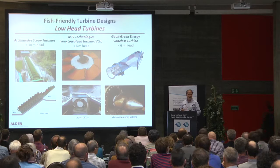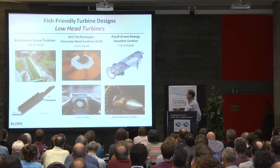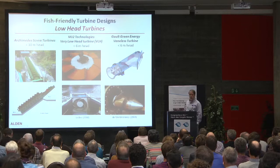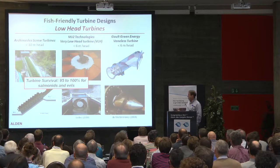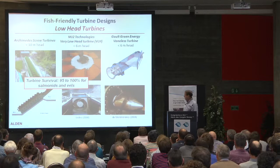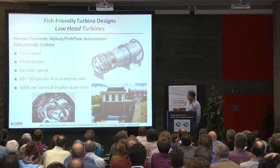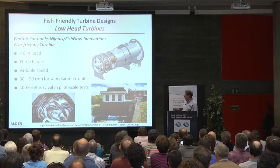I'm going to go over a few more technologies. The Archimedes screw, the very low head turbine, and the Galt Green turbine developed in Canada — which has not been installed or tested with fish. The survival rates for the screw turbines and VLH are 95 to 100% for salmonids and eels, and tweaks have been made to both to keep survival on the high end. The Nihouse turbine operates at less than about eight meters of head, has three blades, and is variable speed. At full-scale prototype, estimated 60 to 90 RPM depending on site, and pilot-scale tests estimated 100% eel survival.